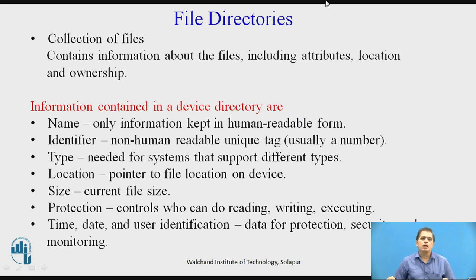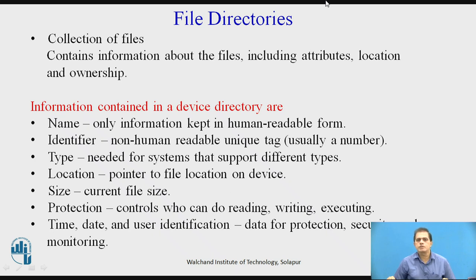File directory — what is a file directory? It is a collection of files which contains information about files including attributes, location, and ownership. The information contained in the directory includes: name, which is the only information kept in human-readable form; identifier, a non-human-readable unique tag usually a number; type, needed for systems that support different types; location, a pointer to the file location on the device; size, the current file size; protection, which controls who can do reading, writing, and executing; and time, date, and user identification for protection, security, and usage.